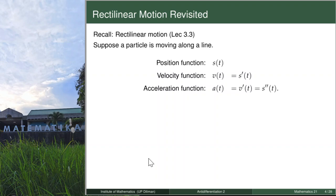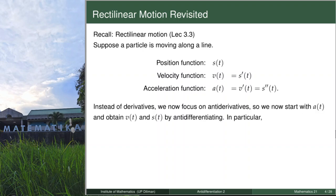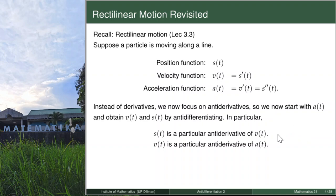Recall our lesson in rectilinear motion in lecture 3.3. Suppose a particle is moving along a line with position function s of t. We know that it's easy to get the velocity and acceleration function by simply differentiating your position function s. To get velocity, you differentiate s, and to get acceleration, you differentiate velocity. But this time, we are interested in antidifferentiation. So instead of starting with the position function s, we will now start with the acceleration function a. To get v, we will antidifferentiate a. Then to get s, we will antidifferentiate v. In particular, s is a particular antiderivative of v, and v is a particular antiderivative of a.